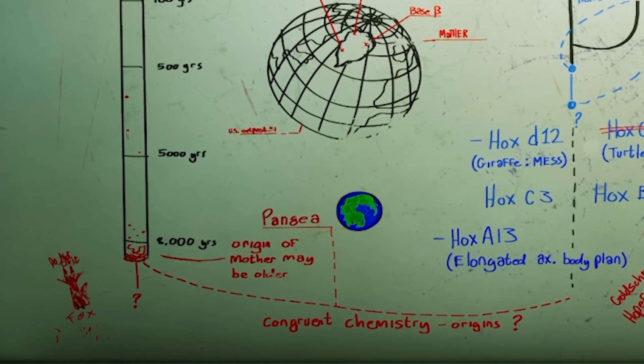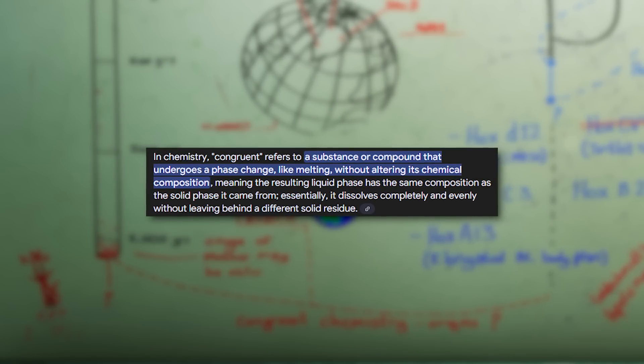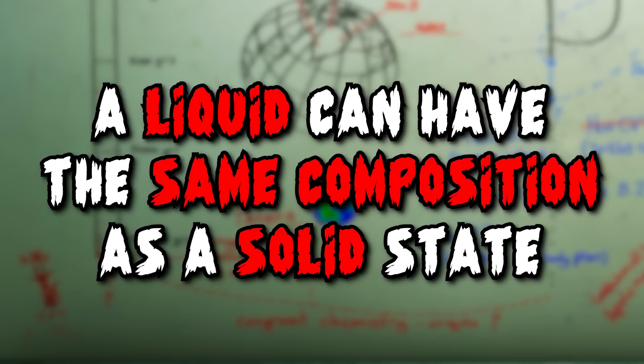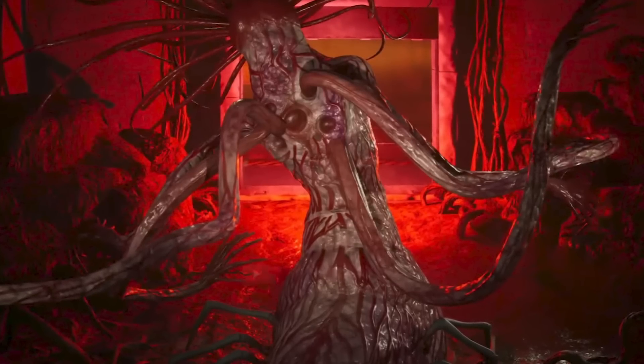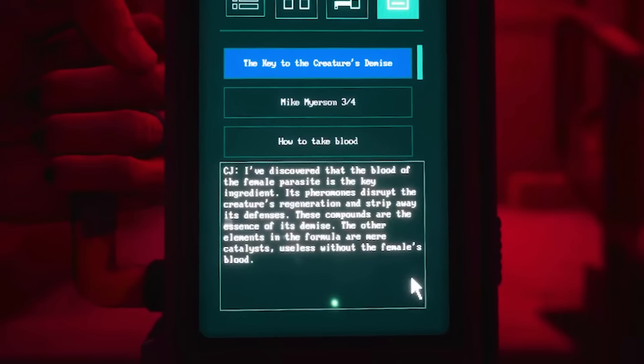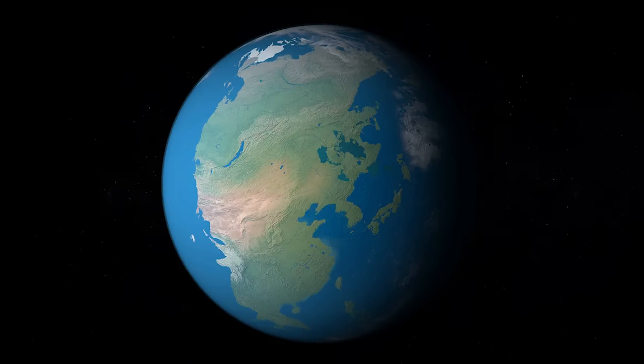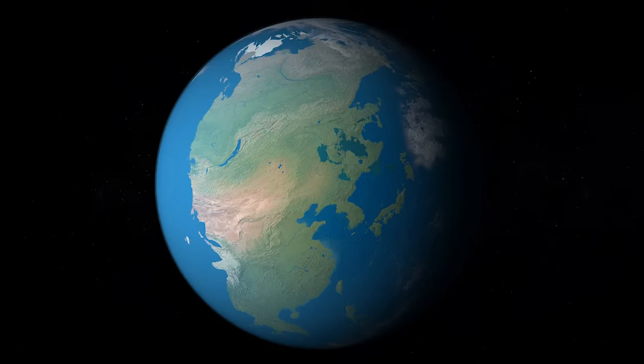The scientists suggest her origin could date back over 8,000 years. However, she could be much older with the help of congruent chemistry — the process where a substance is able to change its form, like melting or dissolving, without altering its chemical composition, meaning a liquid can have the same composition as a solid state. This is suggested because Mother is able to alter her own body; she has the ability to grow arms when needed and is also able to regenerate. This could mean she dates back all the way to Pangaea, where all land on Earth was connected, creating a supercontinent 200 to 300 million years ago. However, there is one folder on a desk with the title 'Lost X Planet,' which could suggest that this mother creature is not actually from Earth and originated on a completely different planet.